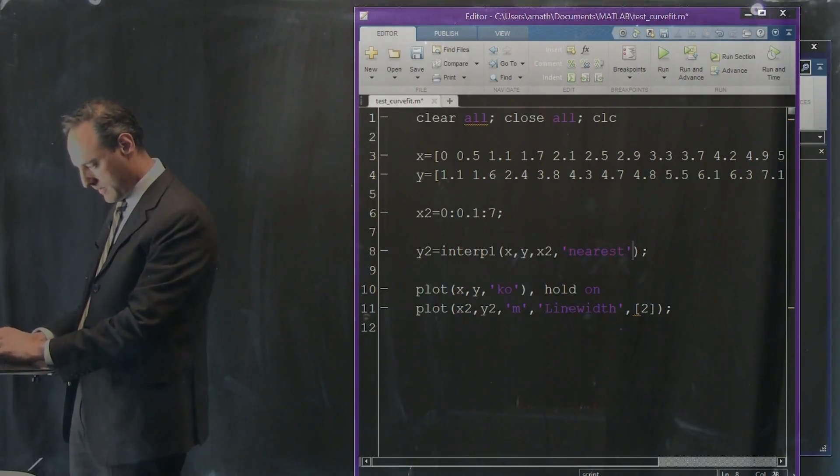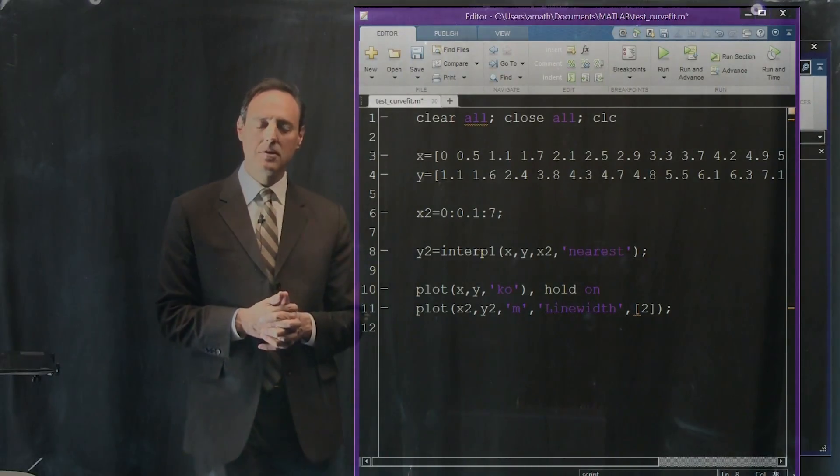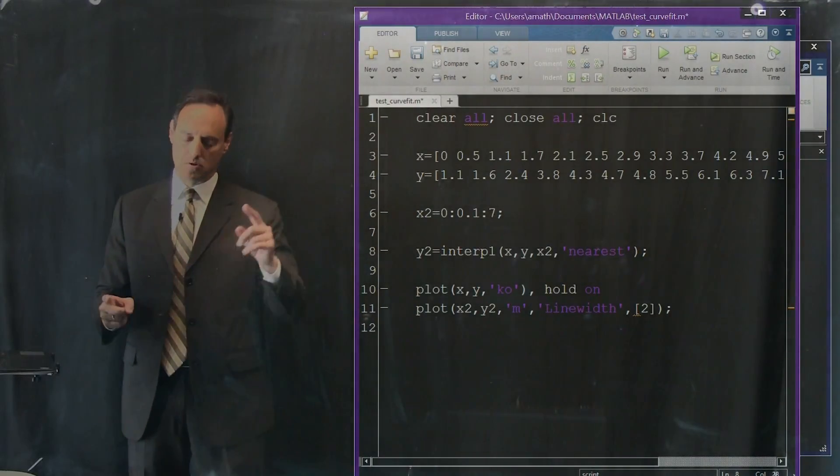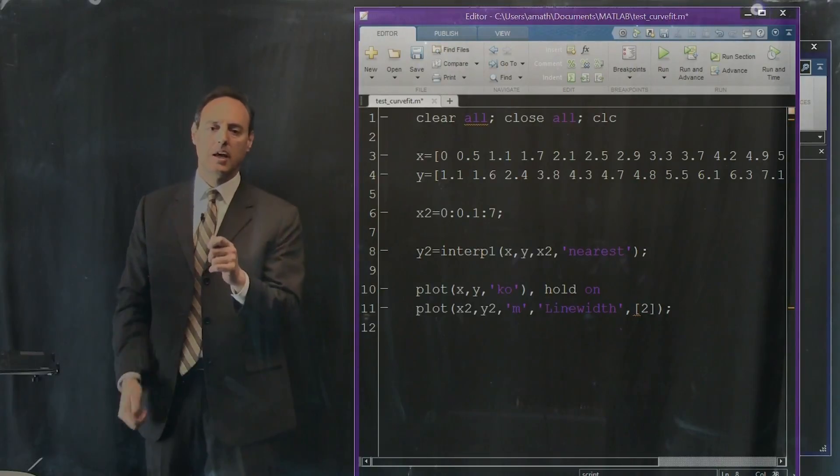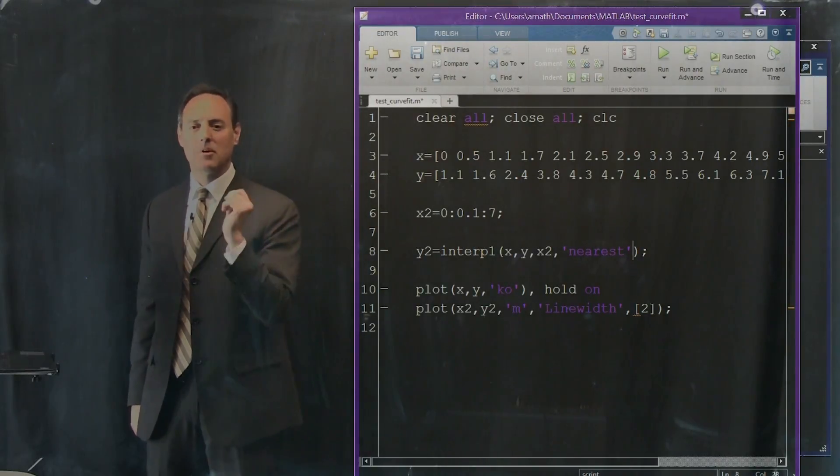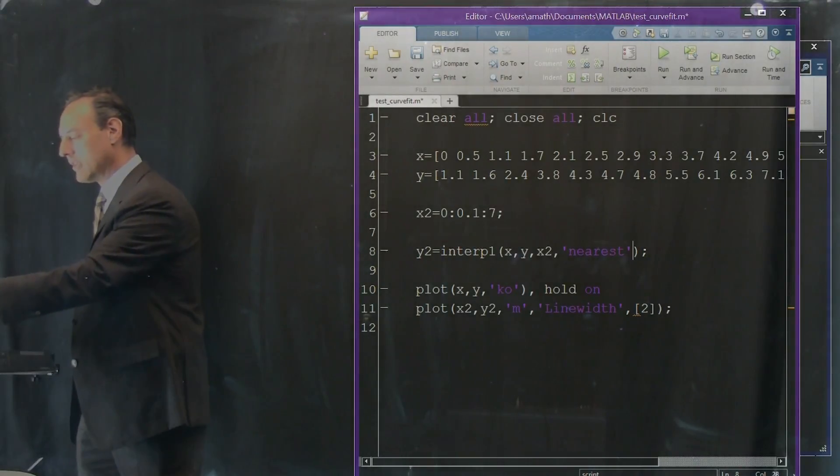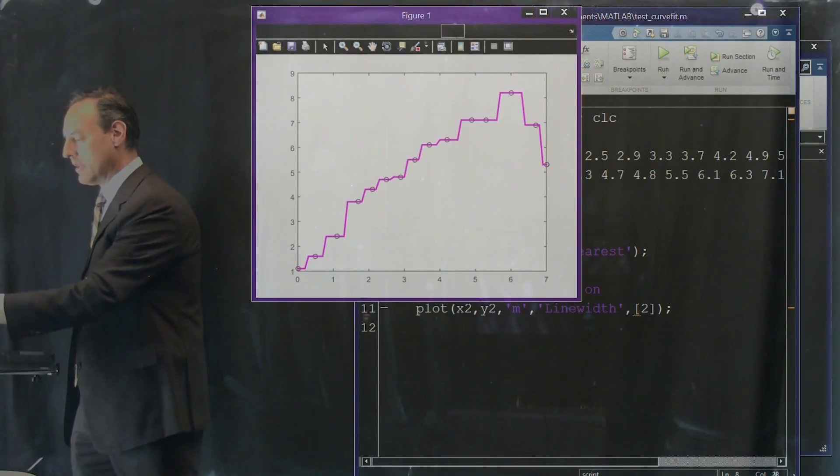And here's one, nearest. So we can use the nearest command. And what that's going to do is say, I'm not going to just draw a line between these points. I'm going to say, whichever point I'm closest to, I'm going to take their value. So that's how it's going to work. Let's see how it does it in practice. There it is.